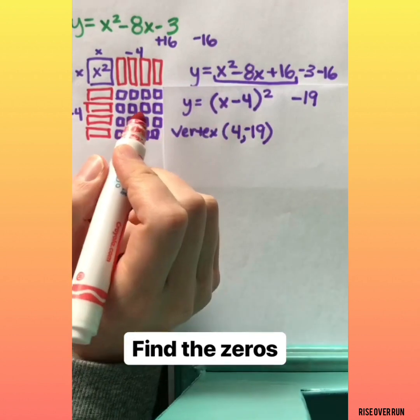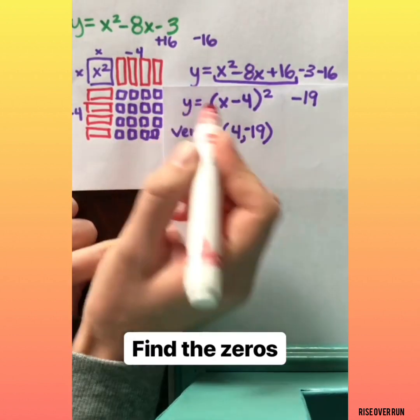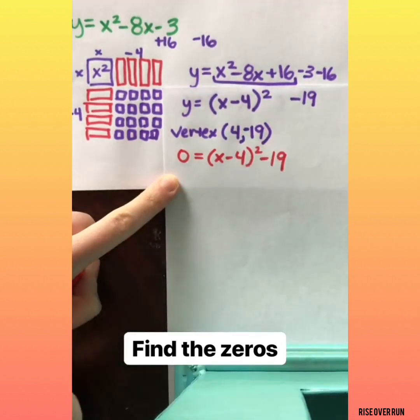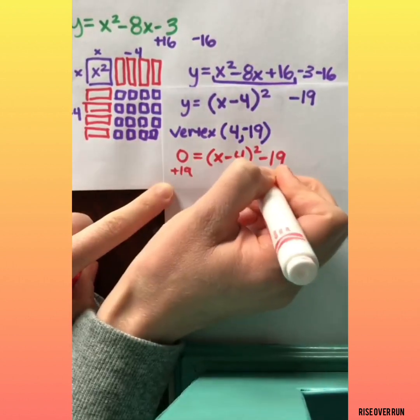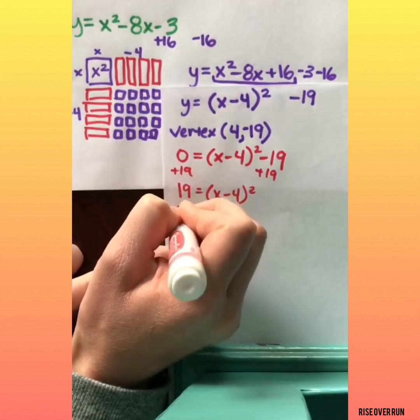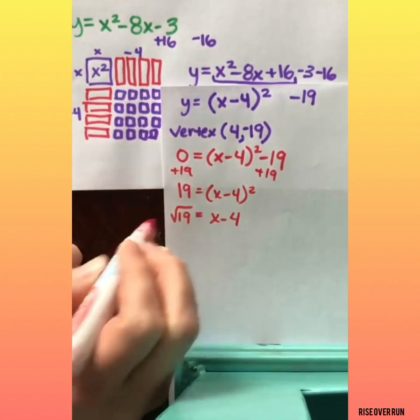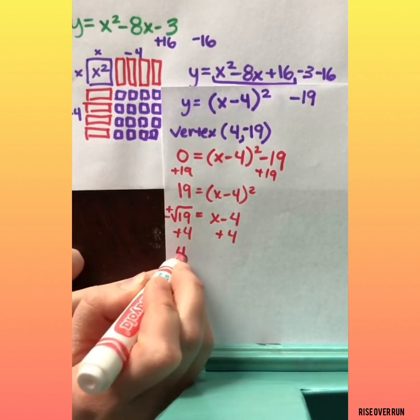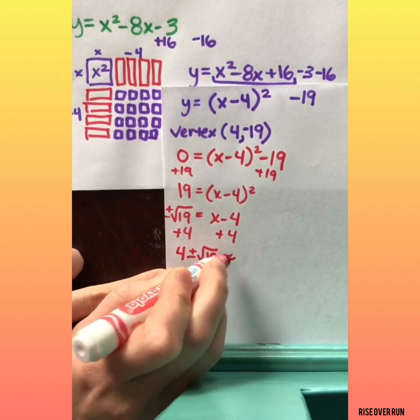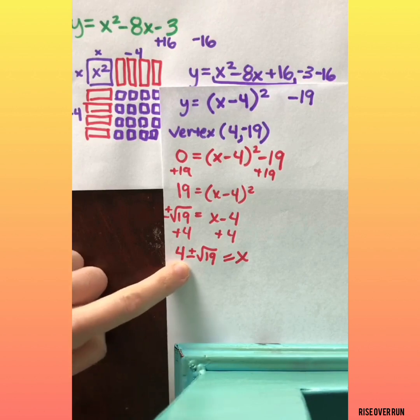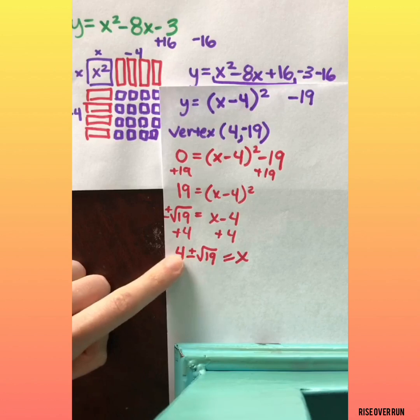This format is also easy to find the zeros or the x-intercepts. I can plug in a zero for y and solve. We'll add 19 to this side. Now I'll take the square root of both sides. Remember square roots have a positive and a negative answer. And then I'll add 4. Many times we'll just leave our answer like this. This is the most accurate answer. It is two solutions. But sometimes you might be asked to find a decimal. You can just punch that in the calculator. Do 4 plus the square root of 19 and 4 minus the square root of 19.